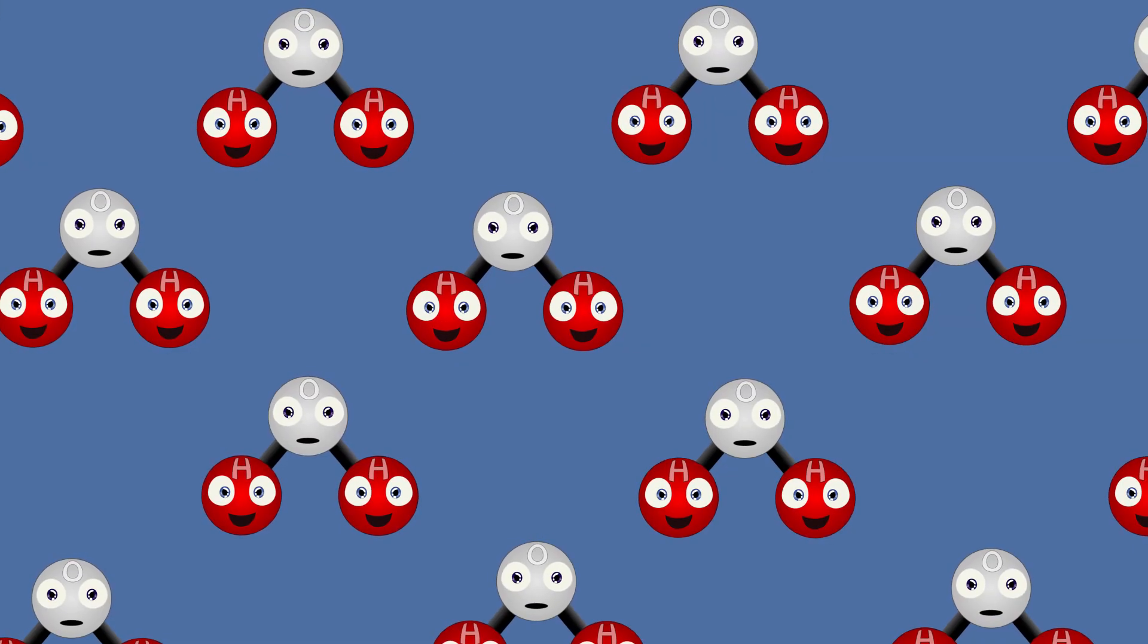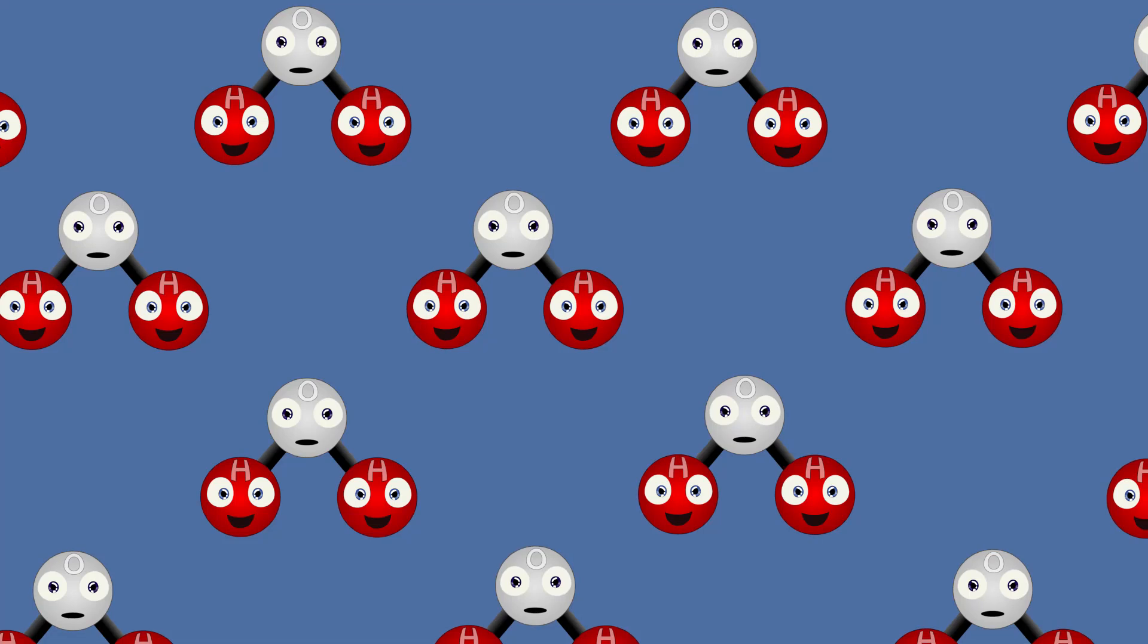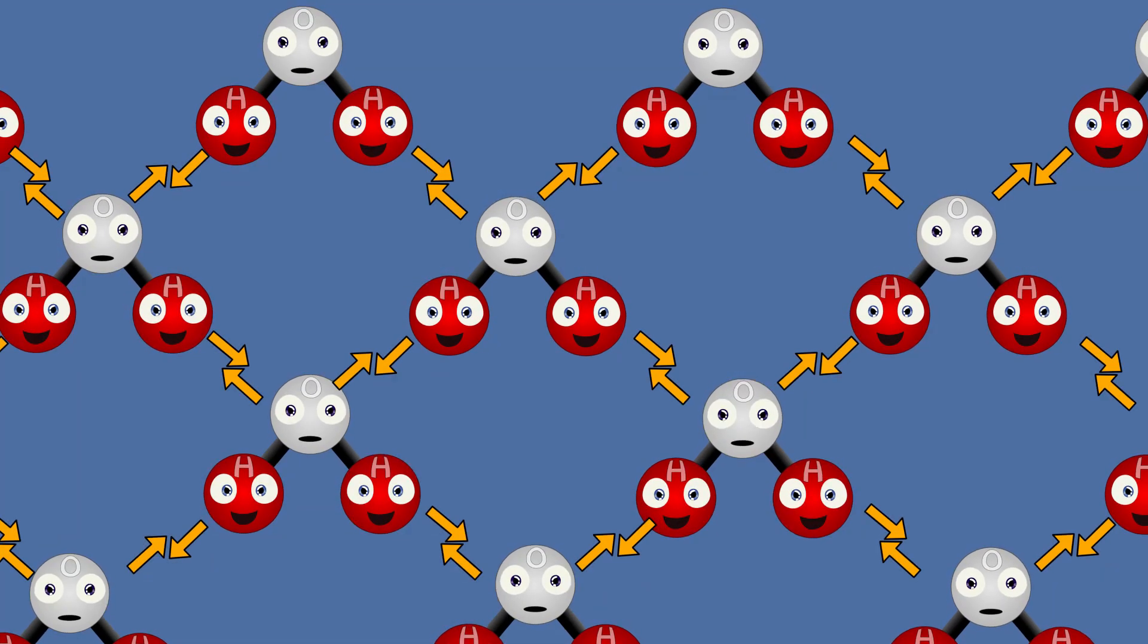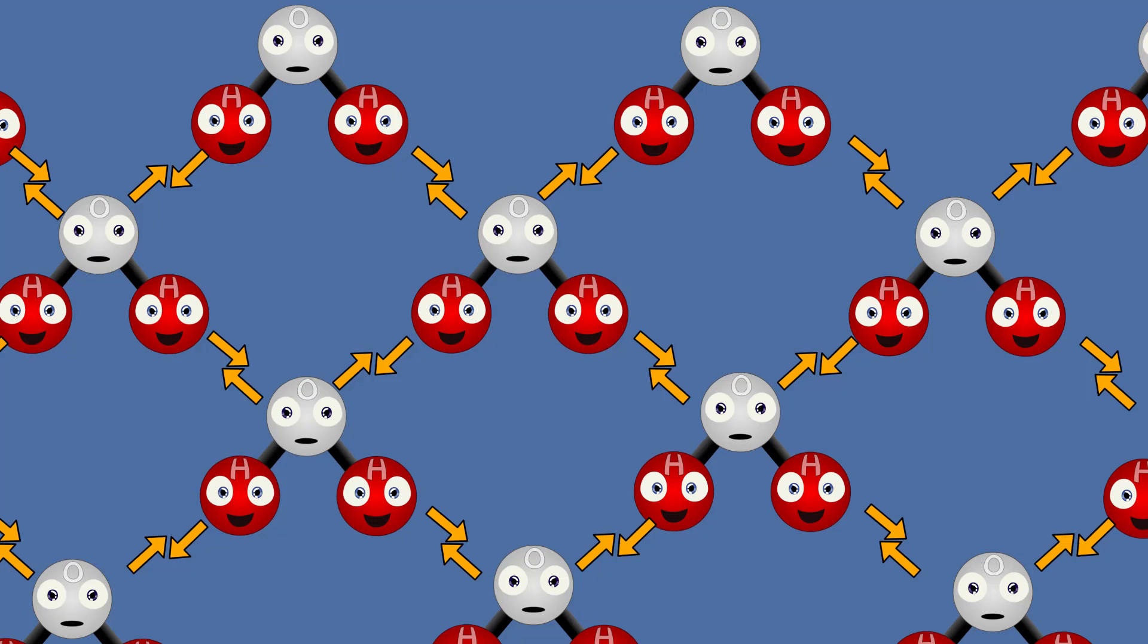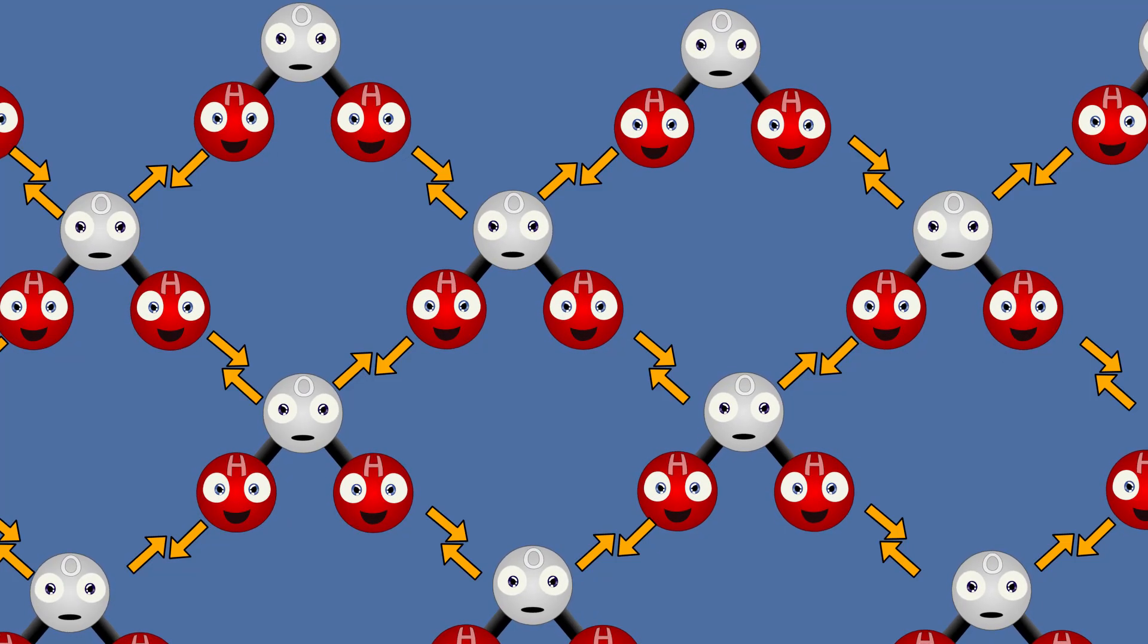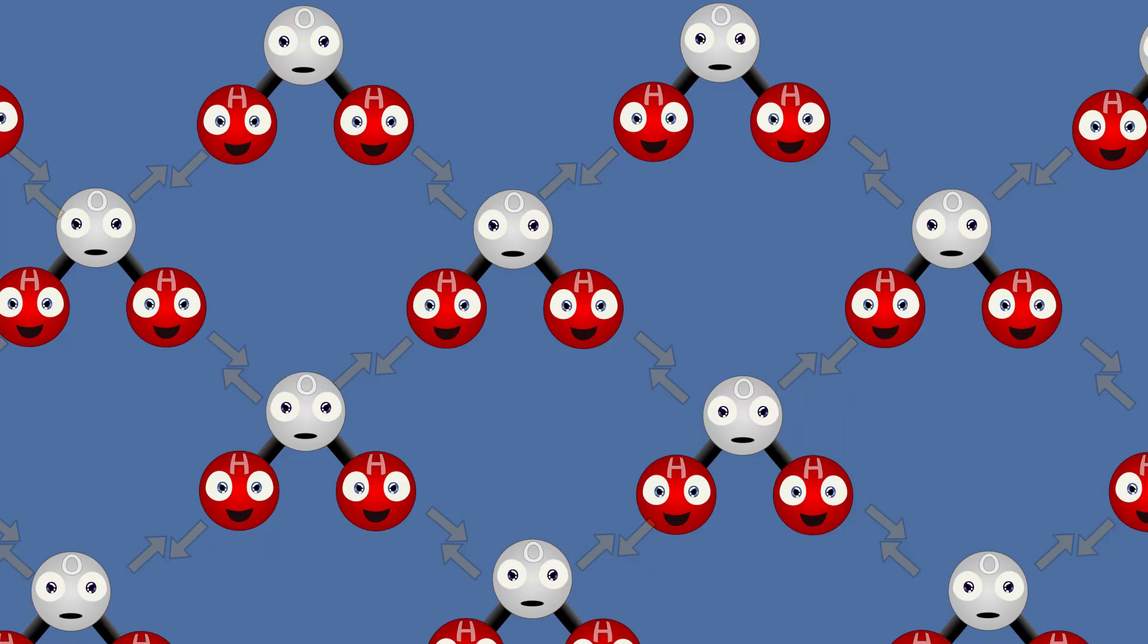Water molecules want to stick close to each other. The force that keeps them within close proximity to each other is known as cohesive force. Cohesion happens between all liquid molecules, but because the molecules inside our glass pull on each other equally in all directions, they generally cancel each other out.